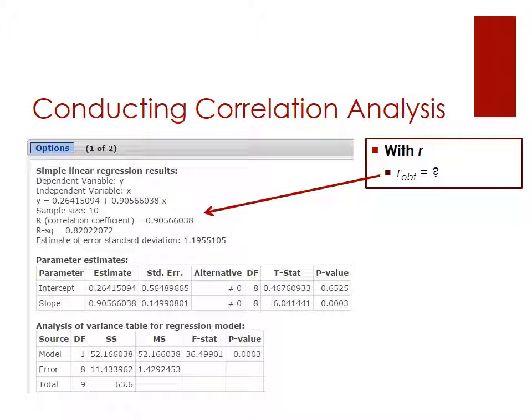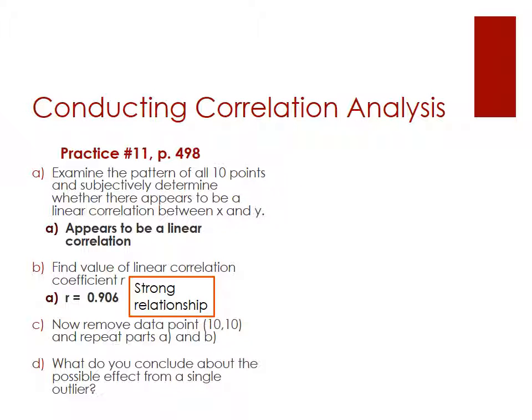So you should have got an output that looks like this. And here we can see, here's our R correlation coefficient. So if we're looking at this, what is going to be the R that I've obtained from my data set here? Keeping in mind your rounding rule, it's going to be 0.906 and that's a strong relationship, right? That's a strong relationship.